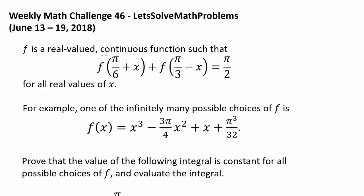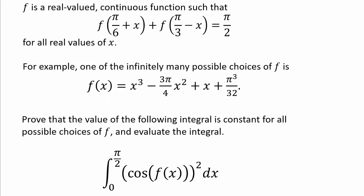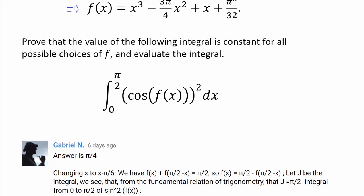Our function f is a real-valued continuous function, and we know f(π/6 + x) + f(π/3 - x) = π/2 for all real values of x. One of the infinitely many possible choices of f is the cubic function f(x) = x³ - (3π/4)x² + x + π³/32. We want to prove that the value of the following integral is constant for all possible choices of f.